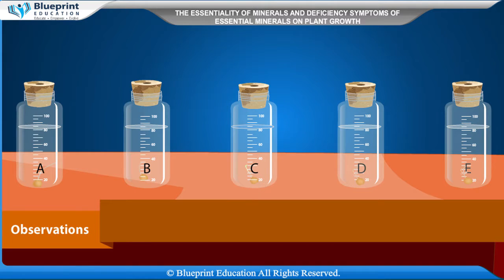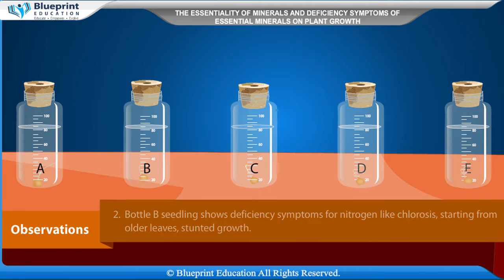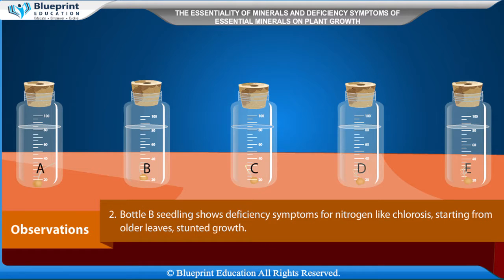Observation: Bottle A shows maximum seedling growth. Bottle B seedling shows deficiency symptoms for nitrogen, like chlorosis starting from older leaves and stunted growth.